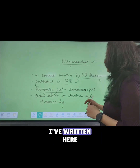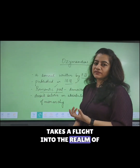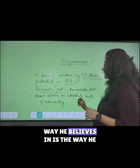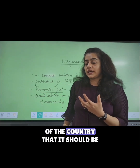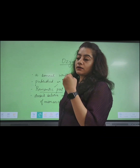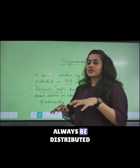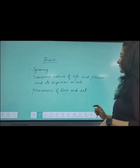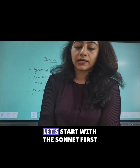A Romantic poet is a person who takes a flight into the realm of imagination. What is peculiar about P.B. Shelley is the way he believes in democratic rule — that the power of the people should determine who leads them, and it should always be distributed and belong to the people. Now let's start with the sonnet.